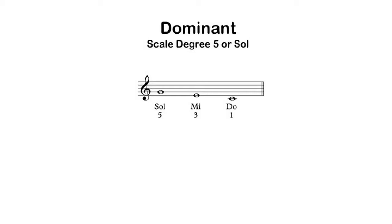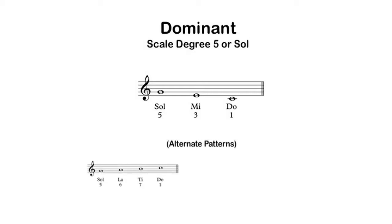There are also two alternate patterns for the dominant — other ways that you might choose to hear how scale degree 5 wants to move. Scale degree 5 can move up a scale to scale degree 1: five, six, seven, one. Scale degree 5 can also simply leap up to scale degree 1, as it often does at the beginning of a phrase or piece of music: sol, do.